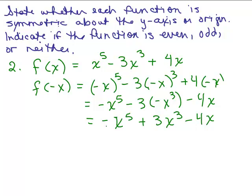Yes, it is — because I have x to the fifth here and negative x to the fifth there. Here I have negative 3x cubed; there I have positive 3x cubed. Here I have plus 4x; there I have minus 4x. So this is going to be an odd function, symmetric with the origin.